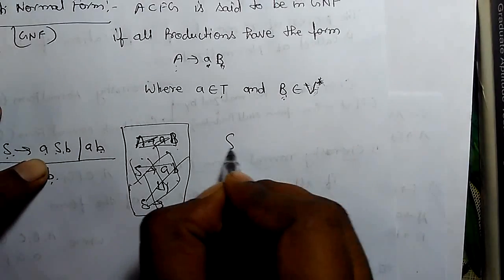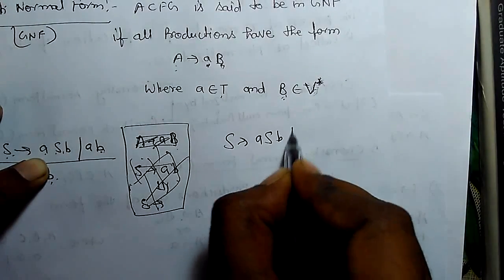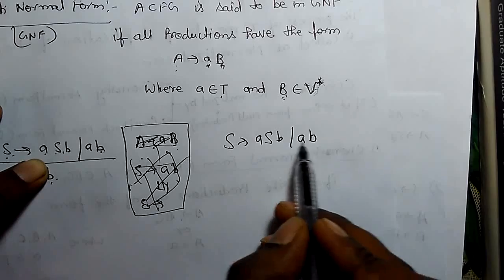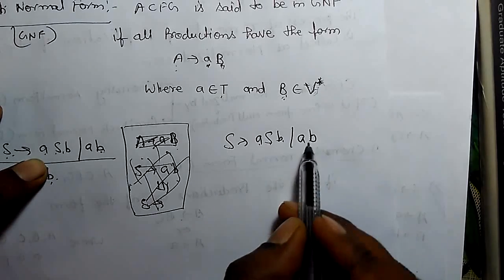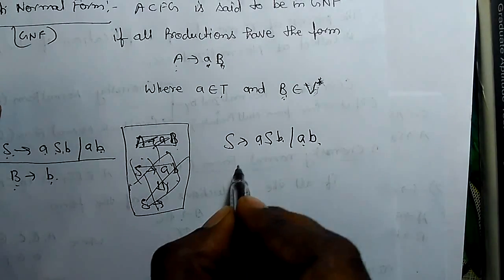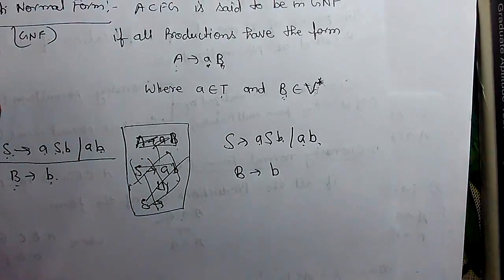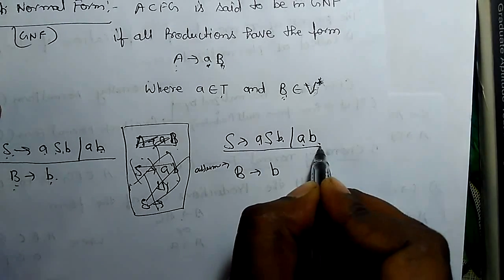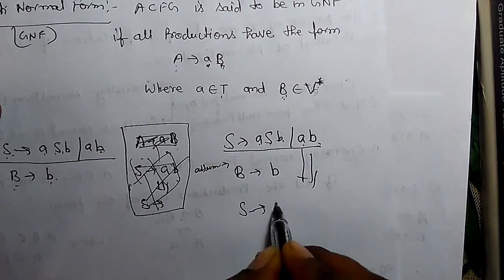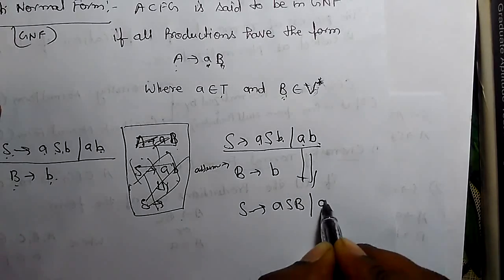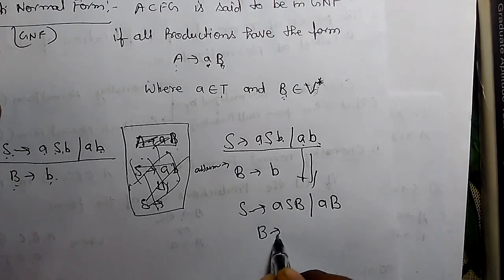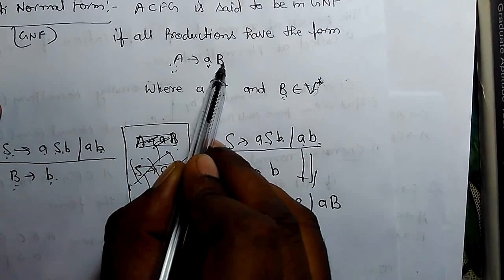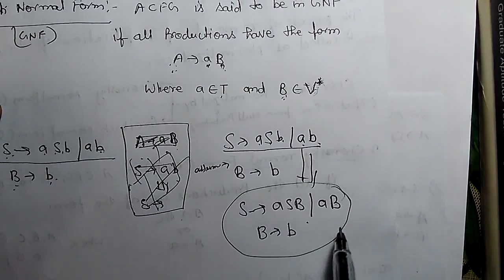There is a question: S derives ASB or AB—is it in GNF or not? We see that S derives ASB and AB both are not in this form. So we will assume there is a variable B that derives terminal b, which is in this assumption. So this complete CFG will be converted into S derives aSB or aB, and B derives b. So this is equivalent to this form: one variable derives a terminal along with variable closure. So it is in GNF.